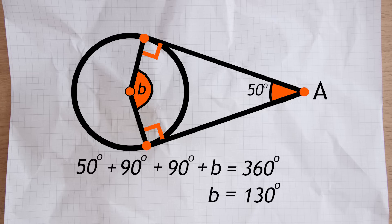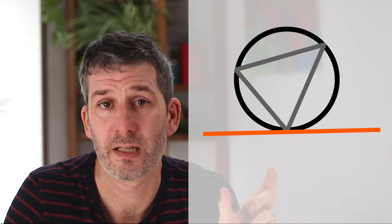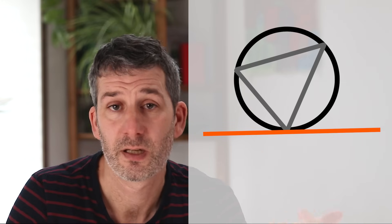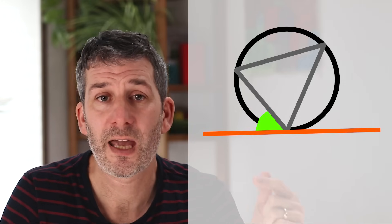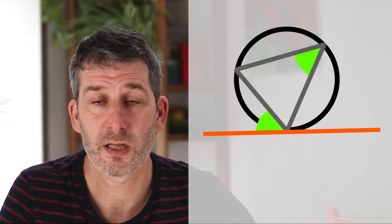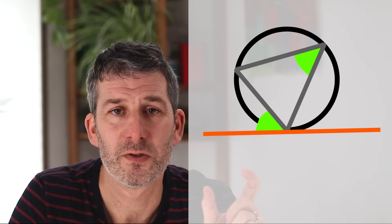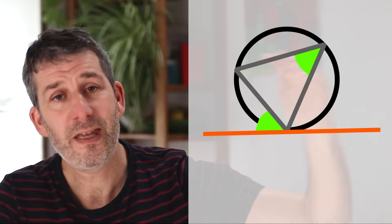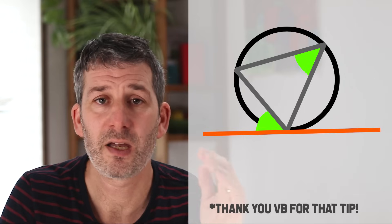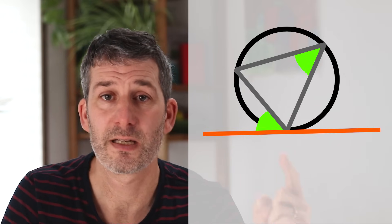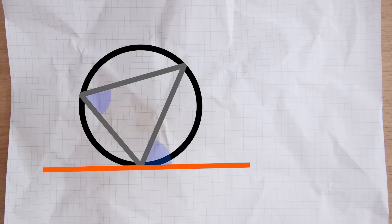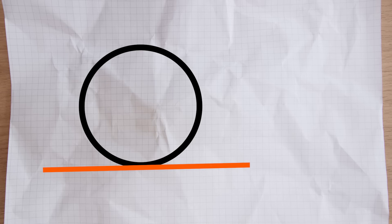The final theorem to do with tangents is the alternate segment theorem: the angle between a tangent and a chord is equal to the angle in the alternate segment. A chord is just a line connecting two points on a circle. So the highlighted angle created between the chord and the tangent is equal to the angle on the other side of the chord - in other words, in the alternate segment. I always found this one really difficult to remember, but I have found it helpful to think of inside, opposite, outside. The angle inside the triangle is equal to the angle that is opposite and outside the triangle.